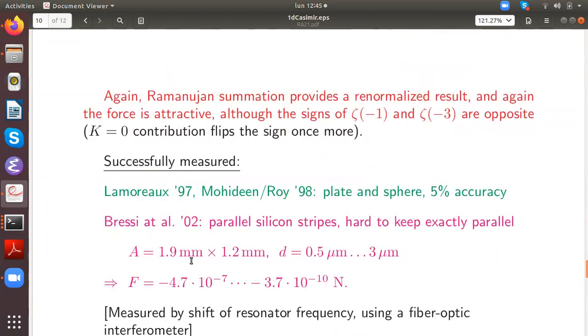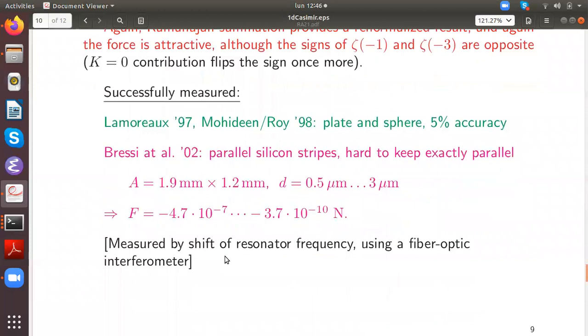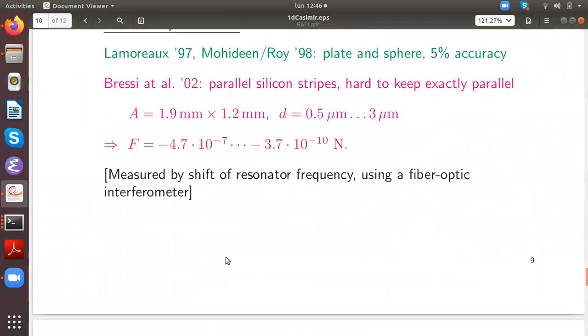This effect was experimentally demonstrated first by Lamoreaux in 1997, and immediately after by Mohideen and Roy to very good accuracy. But they used a plate and a sphere because it is very difficult in experiment to keep two plates exactly parallel. This was first achieved a few years later by a part of our group in Italy. They used silicon stripes with these dimensions, and from the above formula we get then forces in this magnitude. This can in fact be measured. In particular, they measured it from the shift in resonant frequencies, using fiber-optic interferometry.